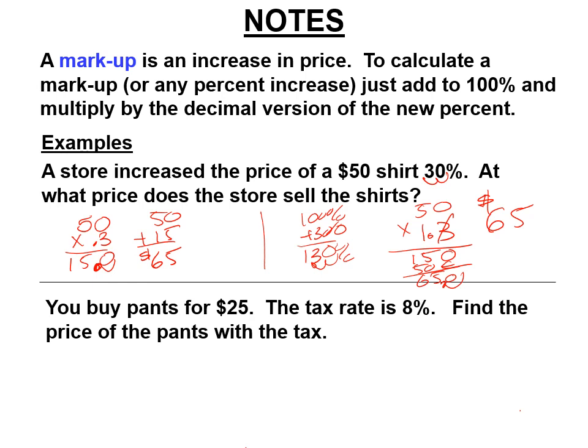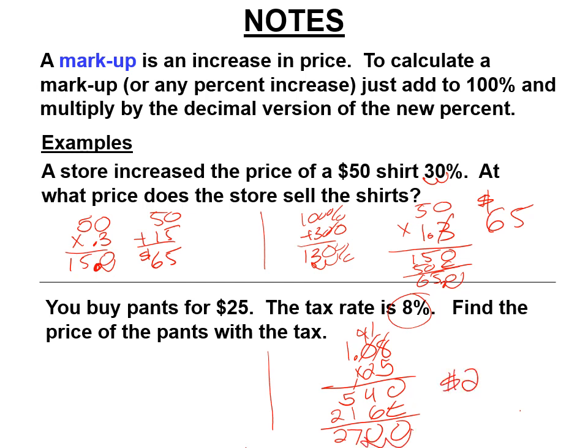You buy pants for $25. The tax rate is 8%. Find the price of the pants with the tax. So if it's 8% tax, that means you're going to pay 108% or 1.08. I'm putting that one up top because it has more digits. We're going to do 1.08 times 25. 5 times 8 is 40, 5 times 0 plus 4 is 4, 5 times 1 is 5. We step over. 2 times 8 is 16, 2 times 0 plus 1 is 1, 2 times 1 is 2. And move the decimal twice. So you're going to pay $27 at the register.